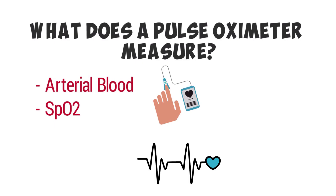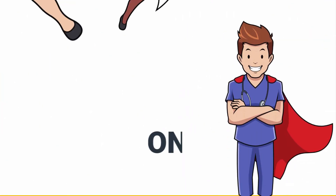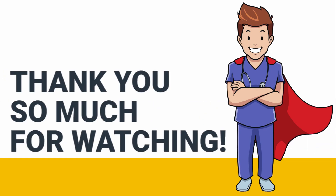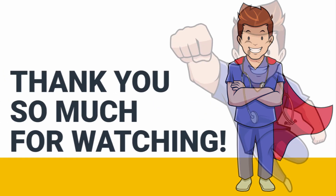By measuring oxygen saturation, the heart rate is automatically calculated alongside the percentage of oxygen. Heart rate and oxygen saturation complement one another, and doctors and respiratory therapists rely on these readings to know how to properly treat their patients.